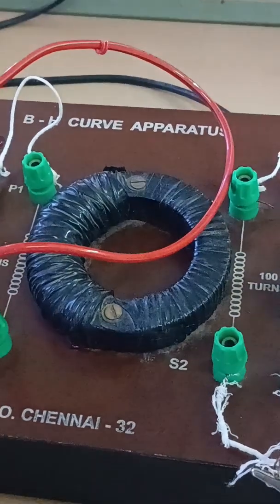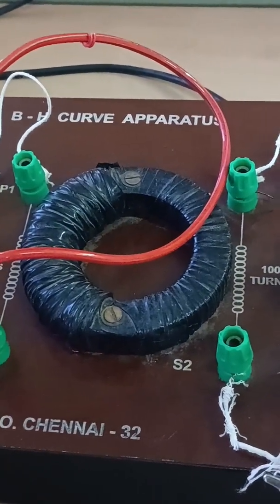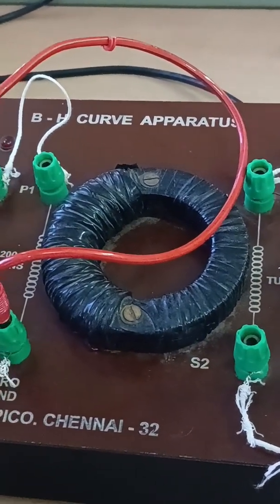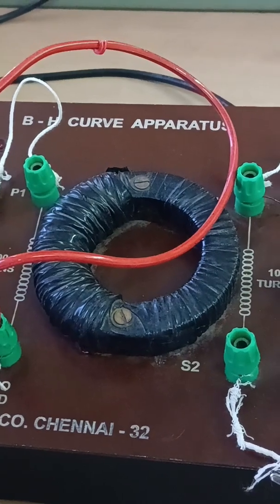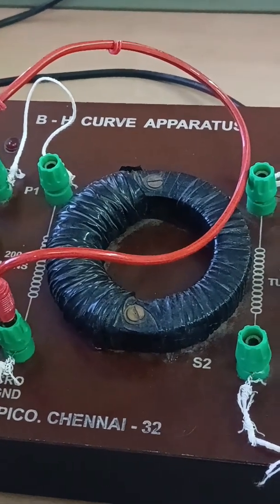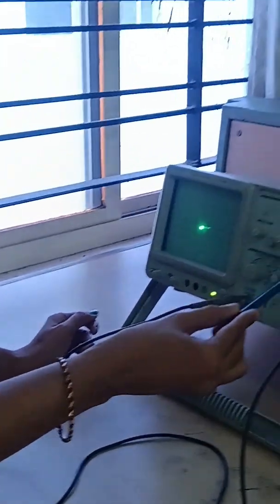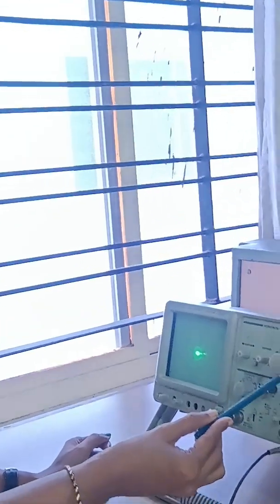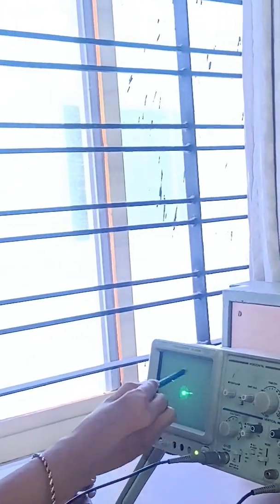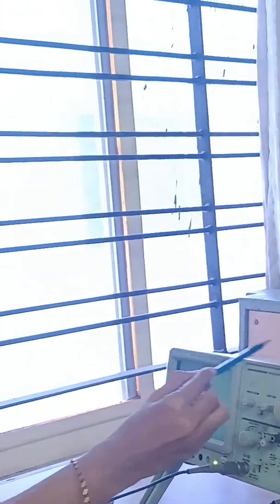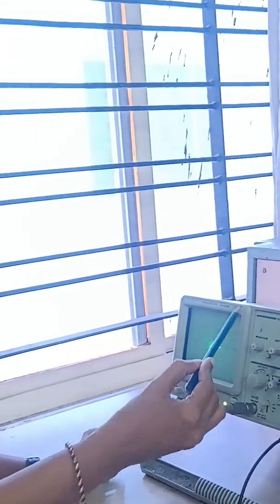The aim is to determine B versus H variation and also the hysteresis loss, how much hysteresis loss by using the apparatus. This is CRO. We have to draw the BH curve in this CRO.